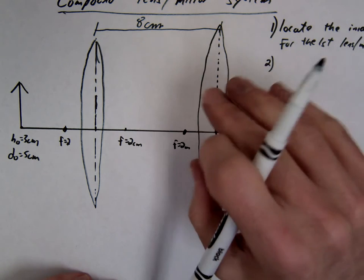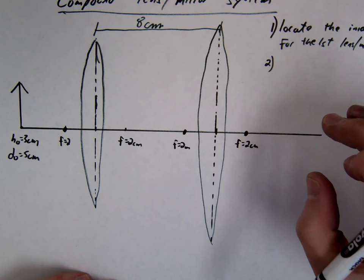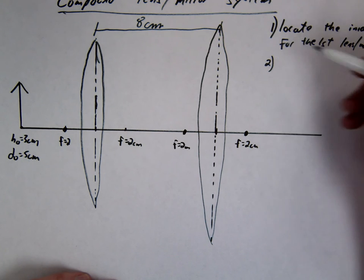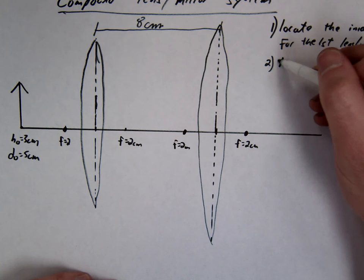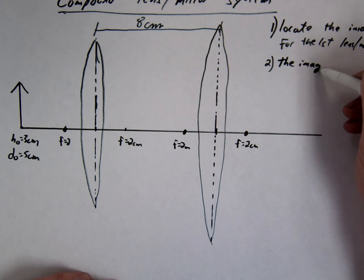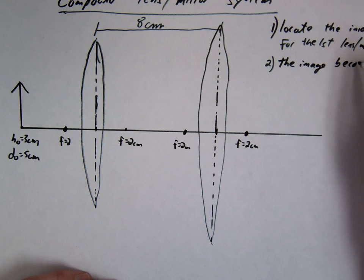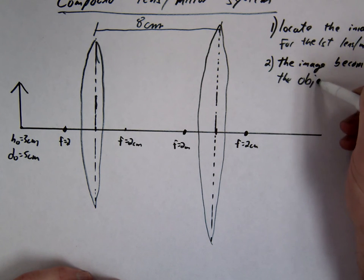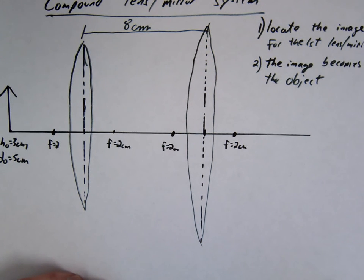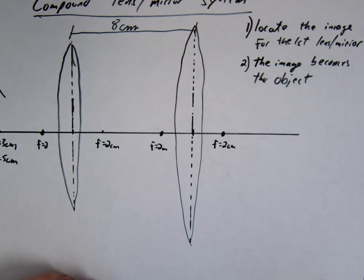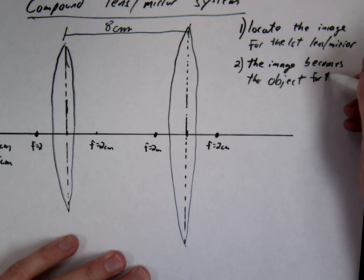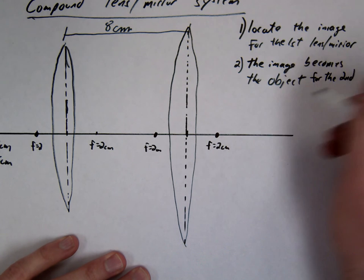So you're just going to pretend like the second mirror doesn't exist or lens. Do it for the first. Then what you're going to do is you're going to use the first image becomes the object for the second one.